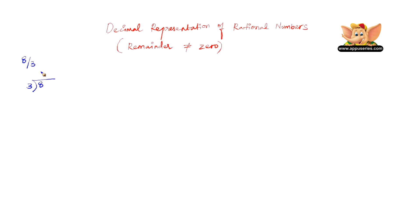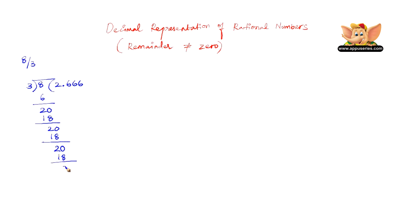3 times 2 gives 6, and the remainder is 2, which is not divisible by 3. Therefore, add a 0 and a decimal point next to the quotient. 3 times 6 is 18, remainder is 2 — not divisible by 3. We keep adding zeros and getting remainder 2 each time; it doesn't seem like it's going to end.